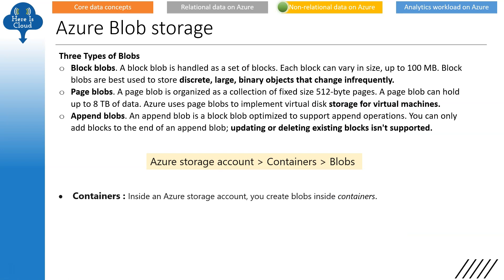For blob storage, there are three types to remember: BlockBlob, PageBlob, and AppendBlob. BlockBlob is handled as a set of blocks, each up to 100 MB — best for storing large binary objects that change infrequently. PageBlob is organized as a collection of fixed-size 512-byte pages, can hold up to 8 terabytes, and Azure uses page blobs to implement virtual disk storage for virtual machines. AppendBlob is optimized to support append operations — you can only add blocks to the end; updating or deleting existing blocks is not supported. Blobs sit inside containers within an Azure Storage account.